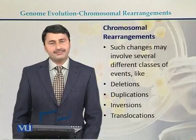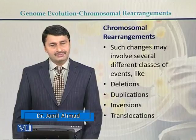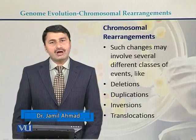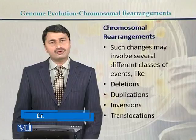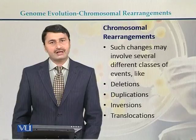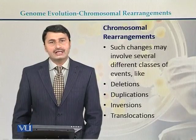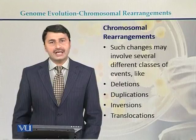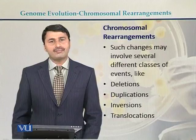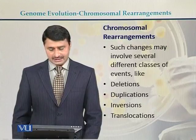Chromosomal rearrangements can be in different forms. It can be in the form of deletions, where small fragments of the chromosome or DNA can be deleted. It can be in the form of duplications, where certain fragments are duplicated. It can be in the form of inversions, where a small fragment of DNA of the chromosome is inverted. And translocations involve movement between two segments of the chromosomes.